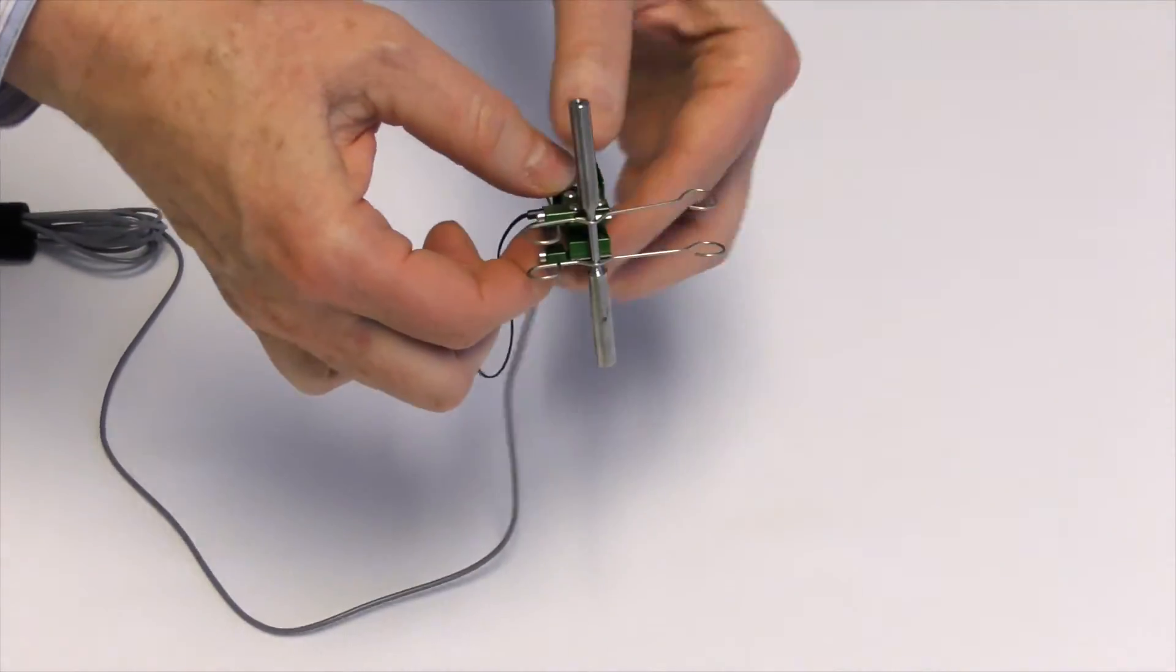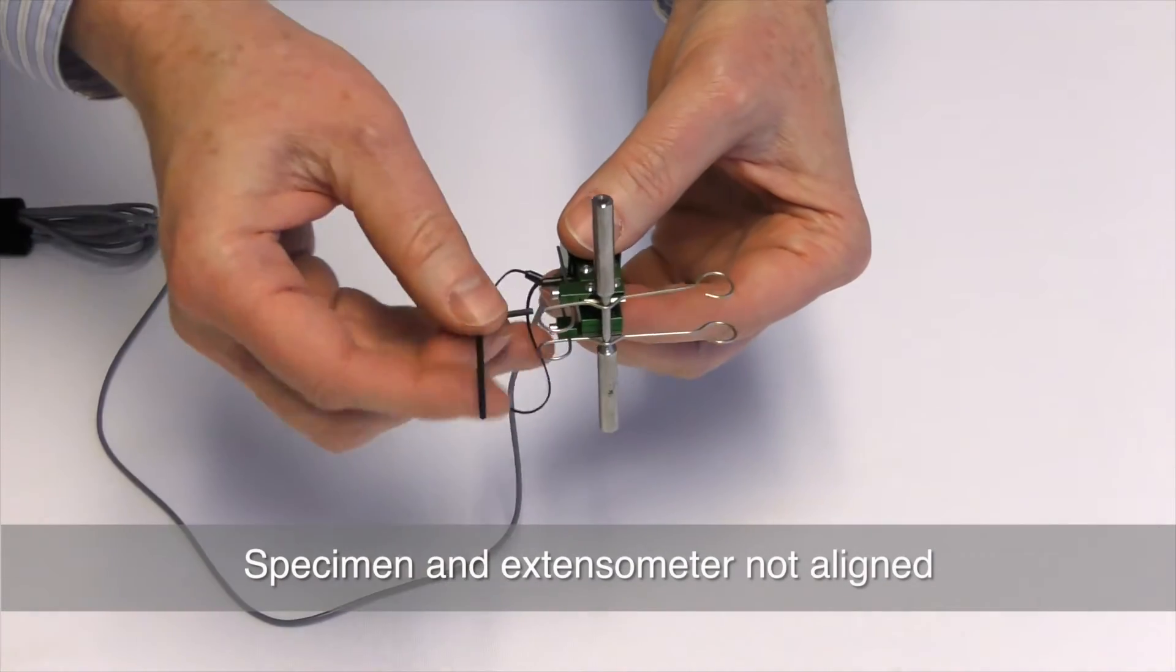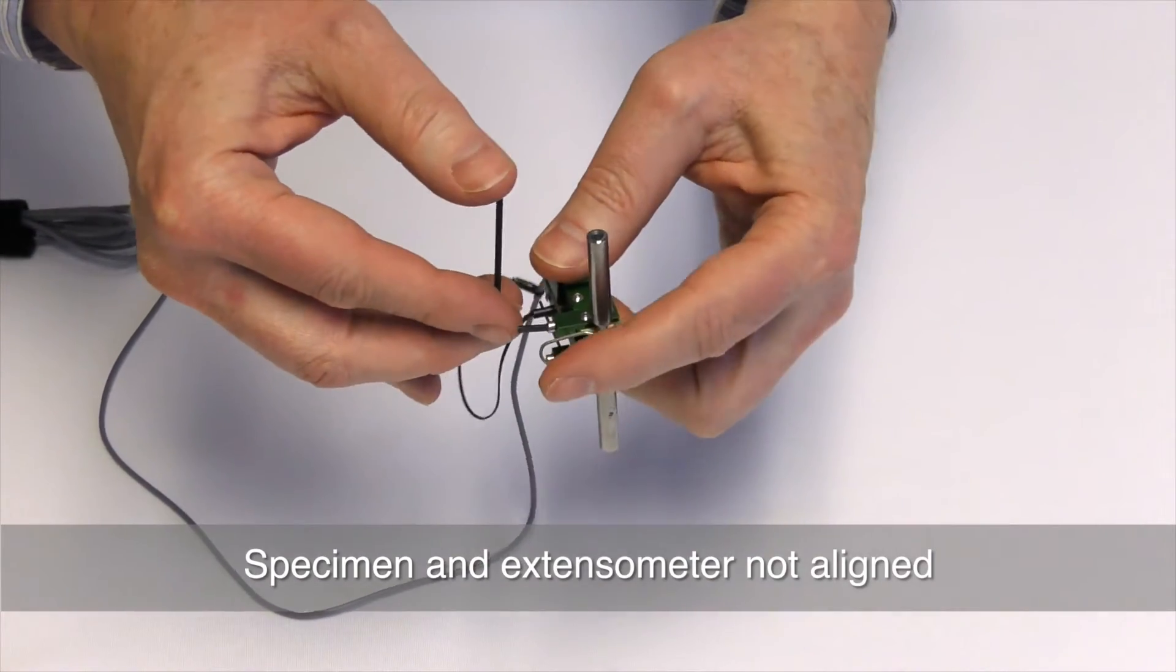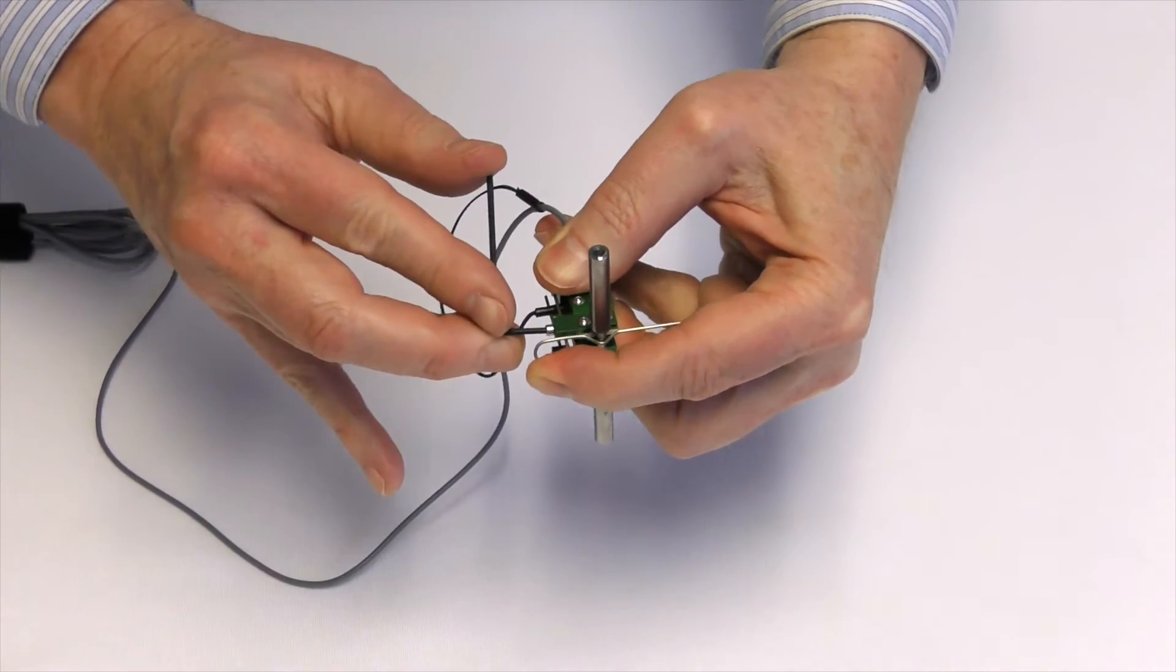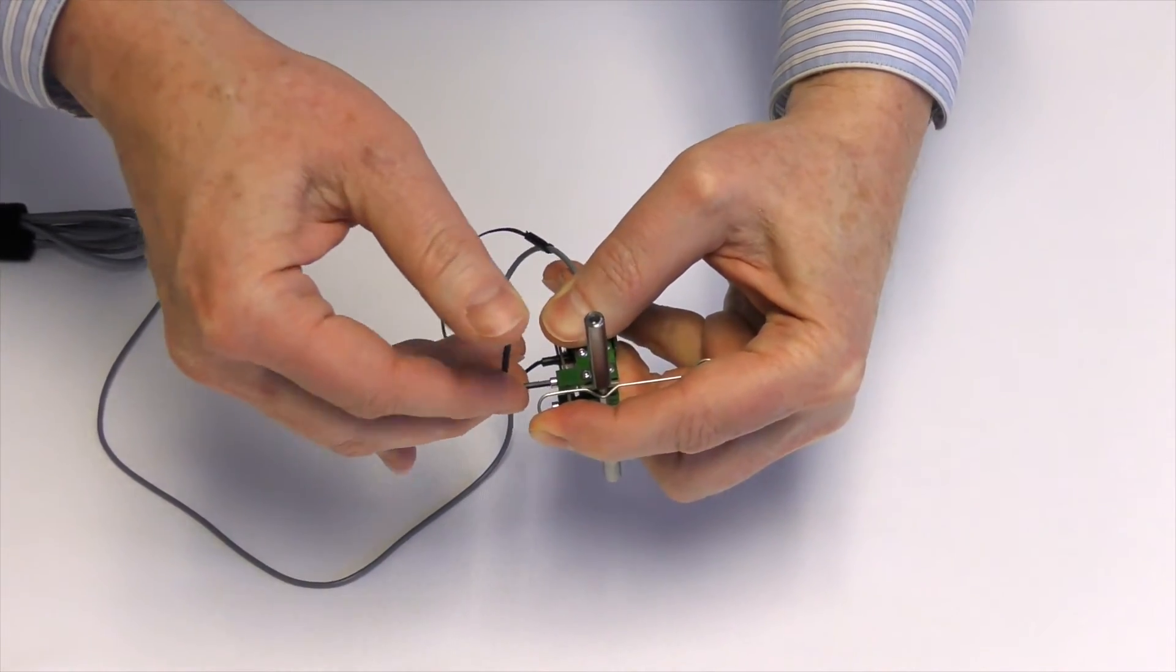When using notched wire forms with round specimens, some fine adjustments of either the top or bottom wire form may be necessary to align the extensometer with the specimen's test axis.